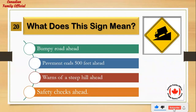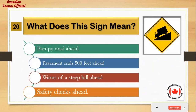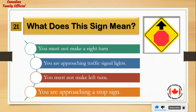What does this sign mean? Number 1: bumpy road ahead. Number 2: pavement ends 500 feet ahead. Number 3: warns of a steep hill ahead. Number 4: safety checks ahead. And the answer is: warns of a steep hill ahead.